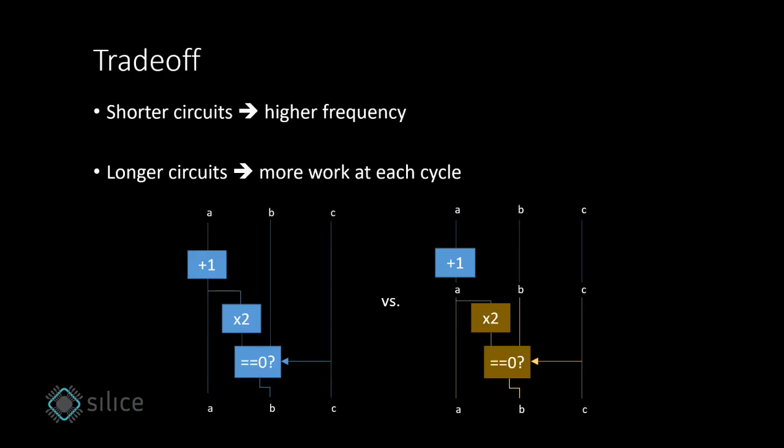So, to recap, we have seen how code becomes circuits. We have seen that shorter circuits means higher frequency, and that longer circuits means more work done at each cycle. Now let's talk about parallelism.